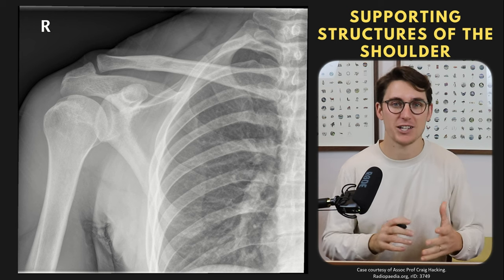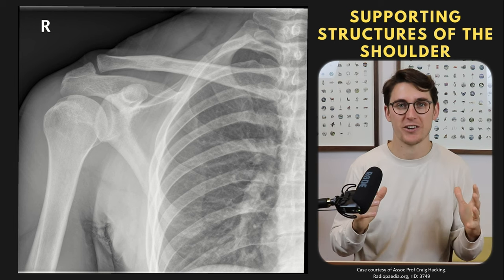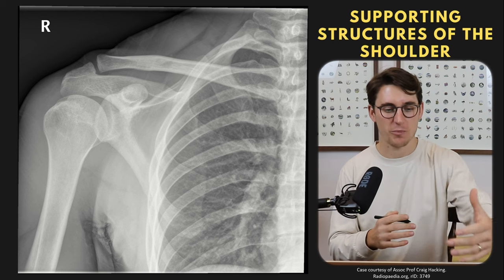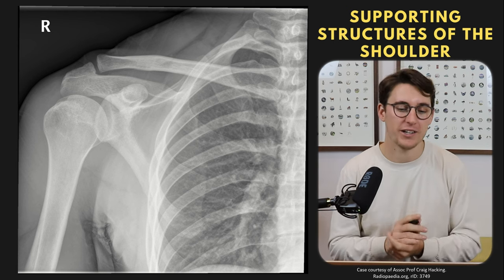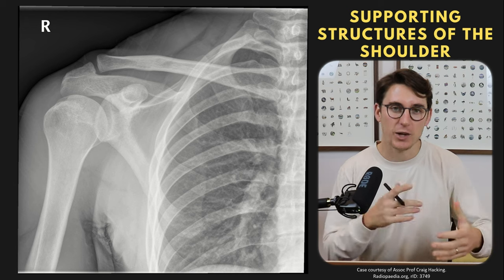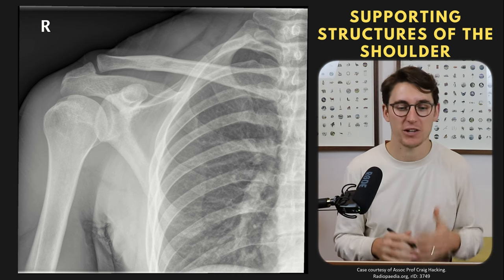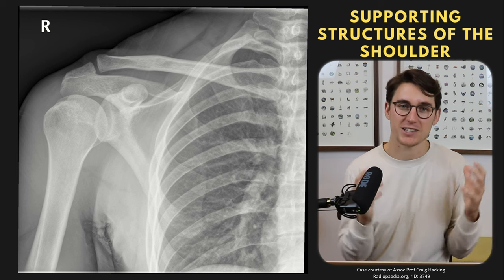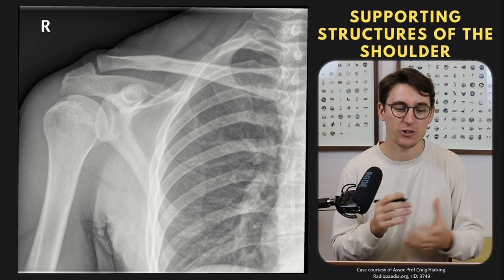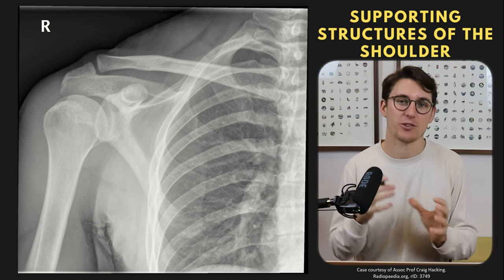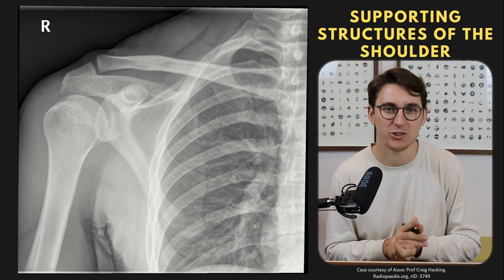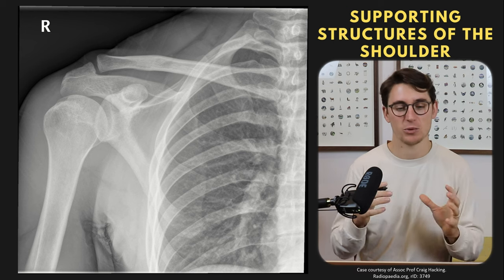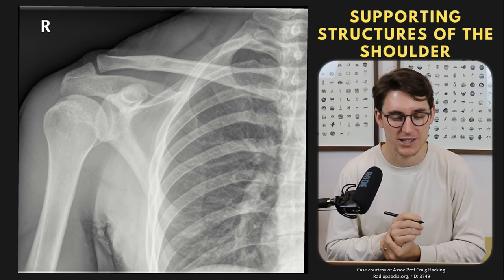The great thing about an X-ray is you can see the joint in its entirety — not just a single slice — and we can see all the structures from anterior to posterior overlaid over each other. We're going to approach each MRI by firstly looking at the bones, then the ligaments, moving on to the capsule and labrum of the glenohumeral joint, and lastly the rotator cuff muscles surrounding the shoulder. Let's identify those structures on the X-ray first.